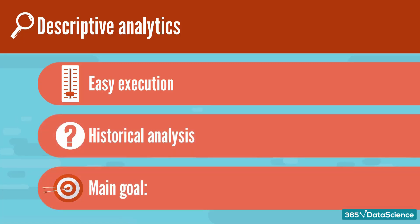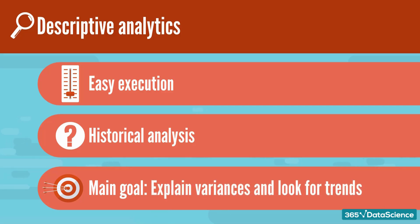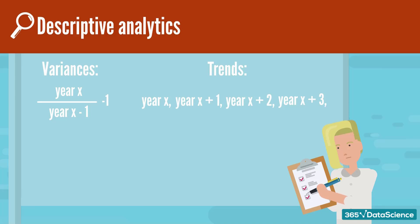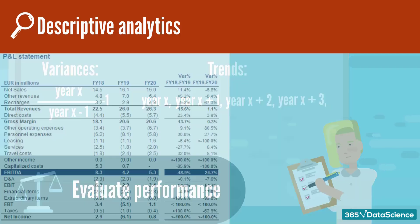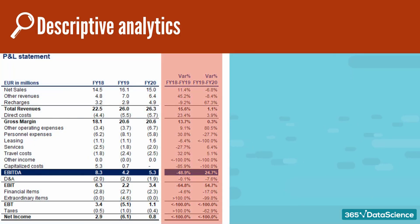The main goal of this type of analysis is to explain variances and look for trends in our data. This allows management to evaluate the firm's business performance and take corrective actions when necessary. The application of historical analysis is an example of a technique that can be used broadly and takes different shapes and forms.